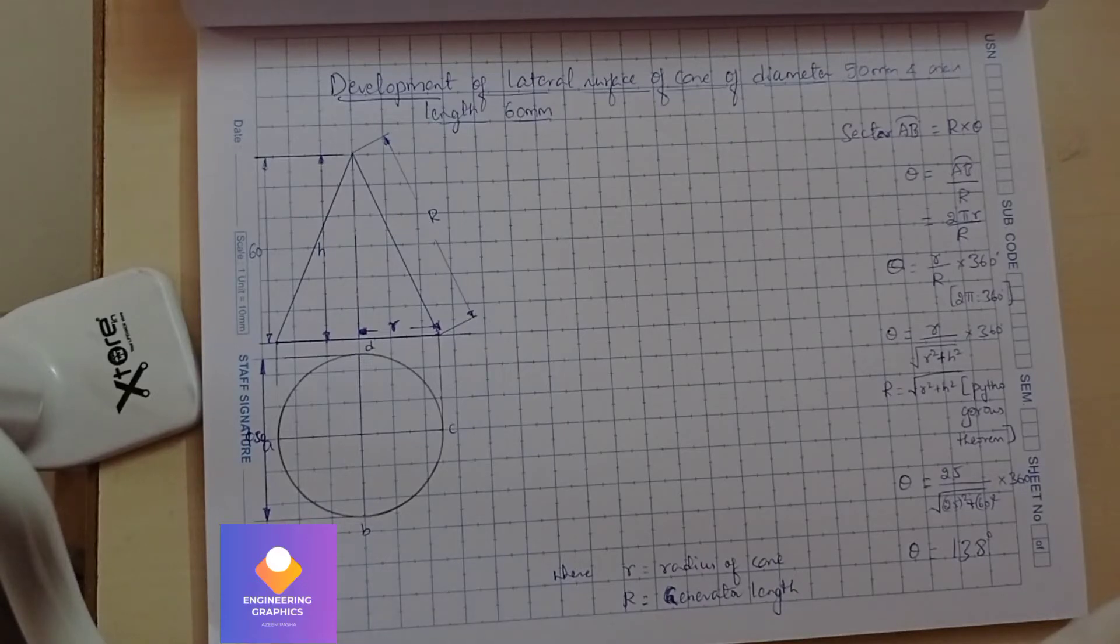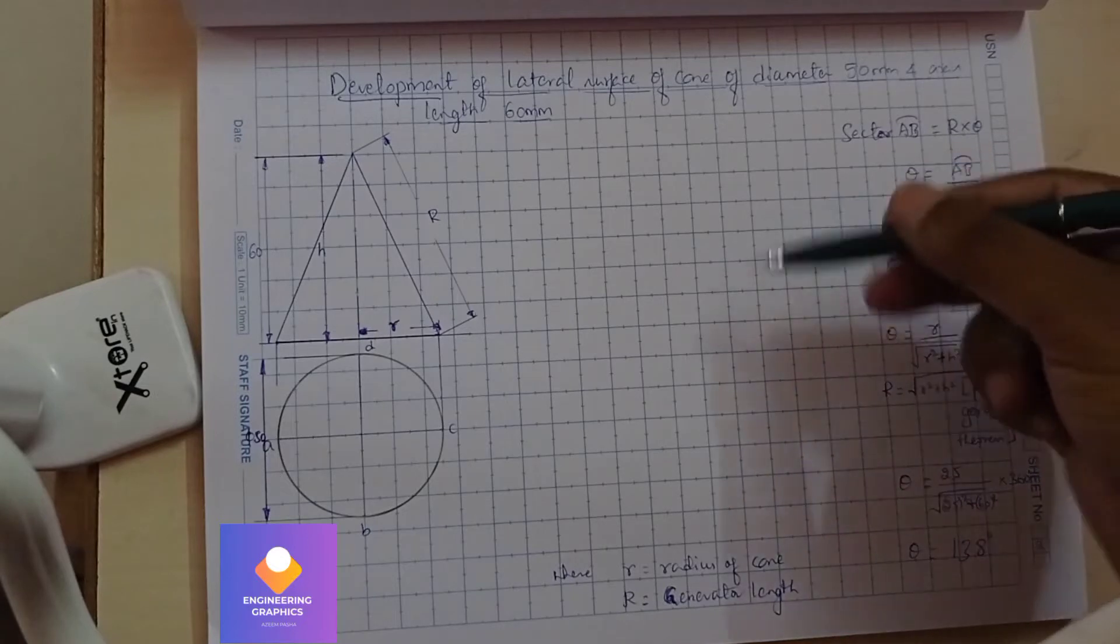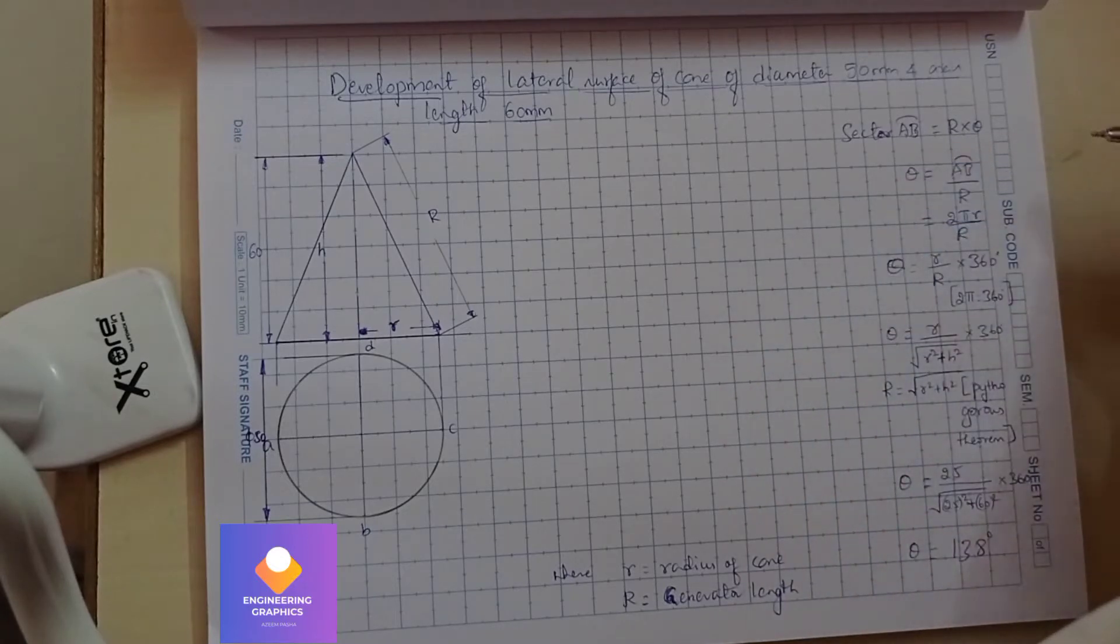H defines the height, which is the axis, and capital R is the generator length. So how to construct this - sector AB length, how are we going to find it out?